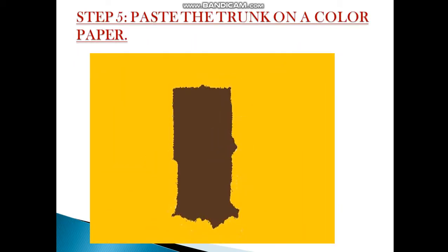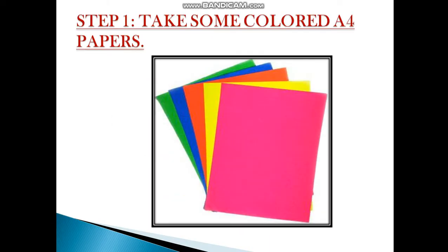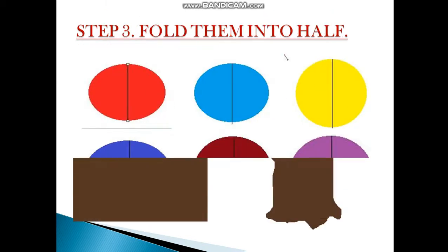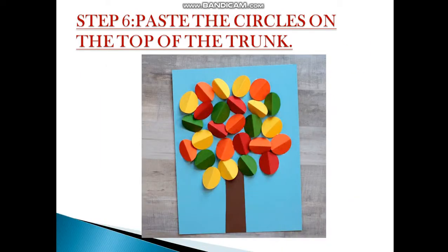Step 5: Paste the trunk on a color paper. You have the entire color paper and you have to paste the trunk on it. Step 6: Paste the circles on the top of the trunk.